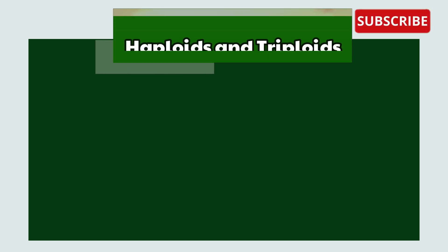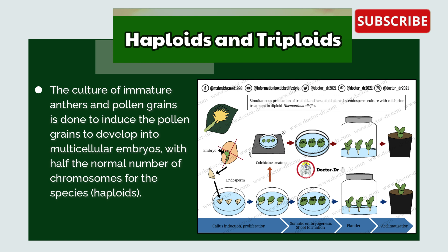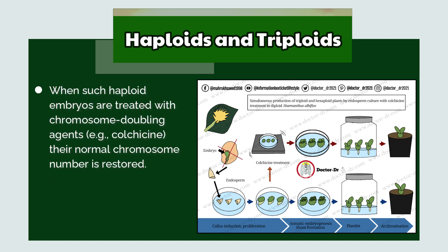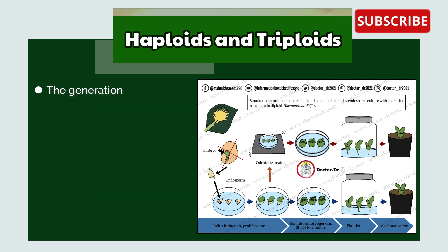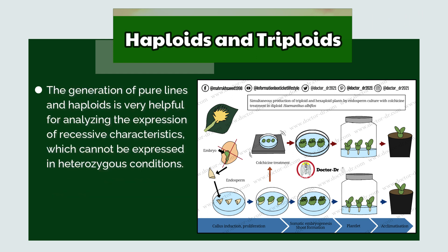Haploids and Triploids: The culture of immature anthers and pollen grains is done to induce the pollen grains to develop into multicellular embryos with half the normal number of chromosomes — haploids. When such haploid embryos are treated with chromosome-doubling reagents such as colchicine, their normal chromosome number is restored. Thus, it is a very easy method for the development of homozygous genotypes or pure lines. The generation of pure lines and haploids is very helpful for analyzing the expression of recessive characteristics which cannot be expressed in heterozygous conditions.